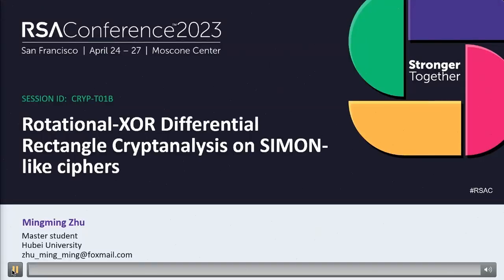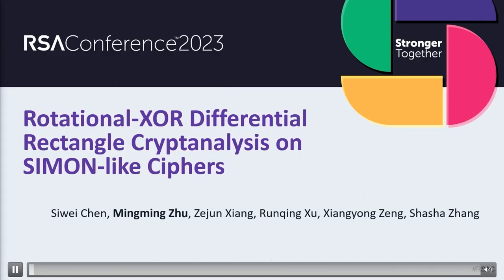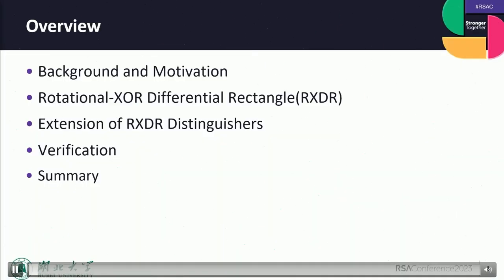Hello everyone. My report title is Rotational XOR Differential Rectangle Cryptanalysis of Simeck Ciphers. This is a joint work with Si Weicheng, Shi Junxiang, Ren Qinxu, Xiang Yunzhen, and Shao Shaozhan. My report consists of five parts: background and motivation; the idea of rotational XOR differential rectangle cryptanalysis; the extension of distinguishers; verification; and summary.